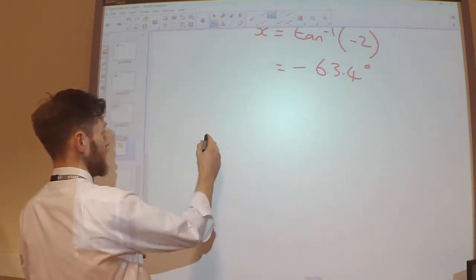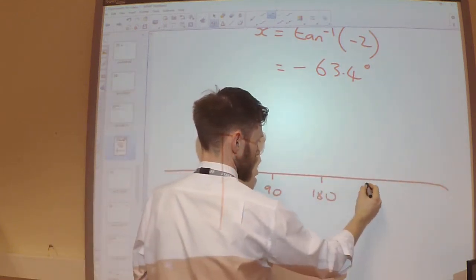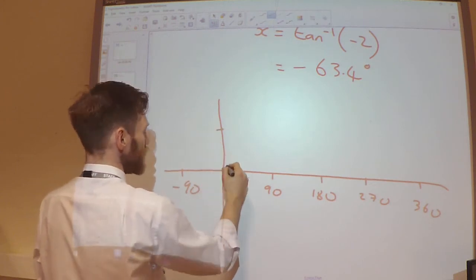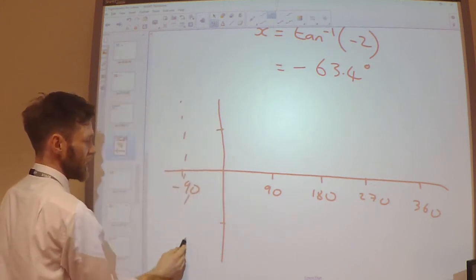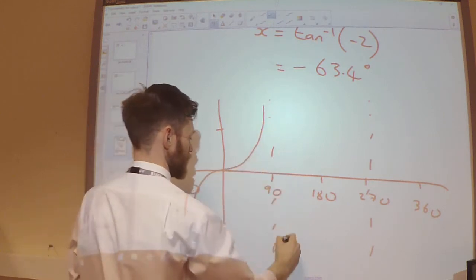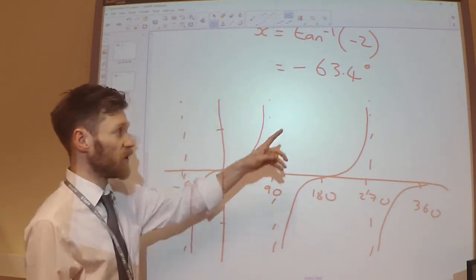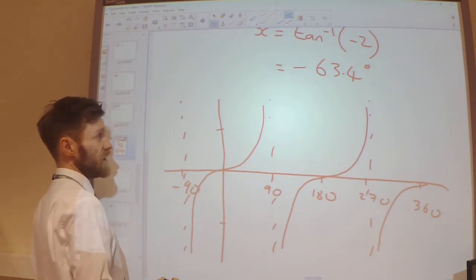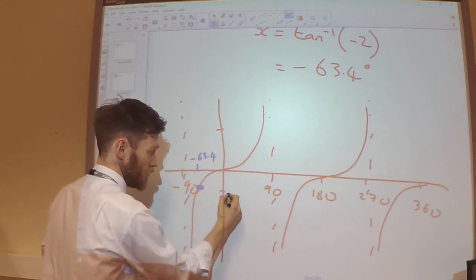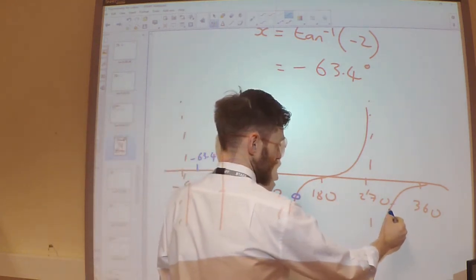So I'm going to draw my graph. And it's a tan graph, so we're going to need to mount up on the asymptotes. So the solution that I've got, the minus 63.4, that is over here. We're looking here when it's equal to minus 2. So looking across, I will have another solution here, and another solution there.